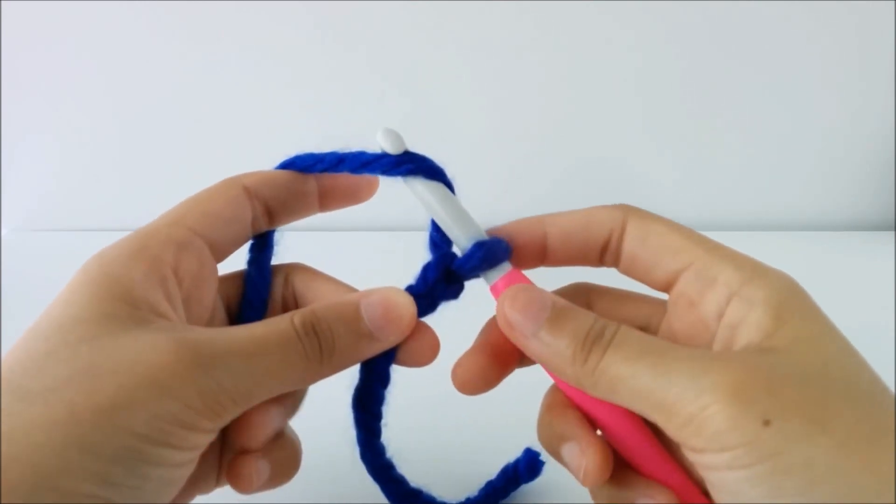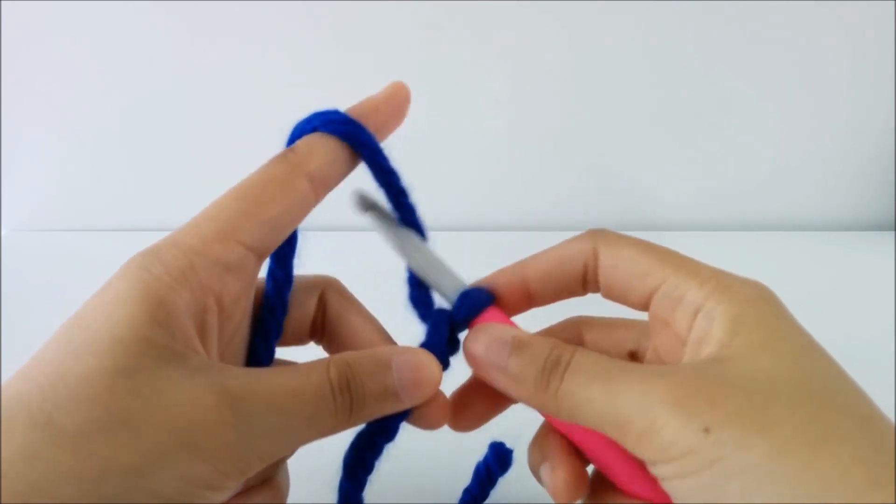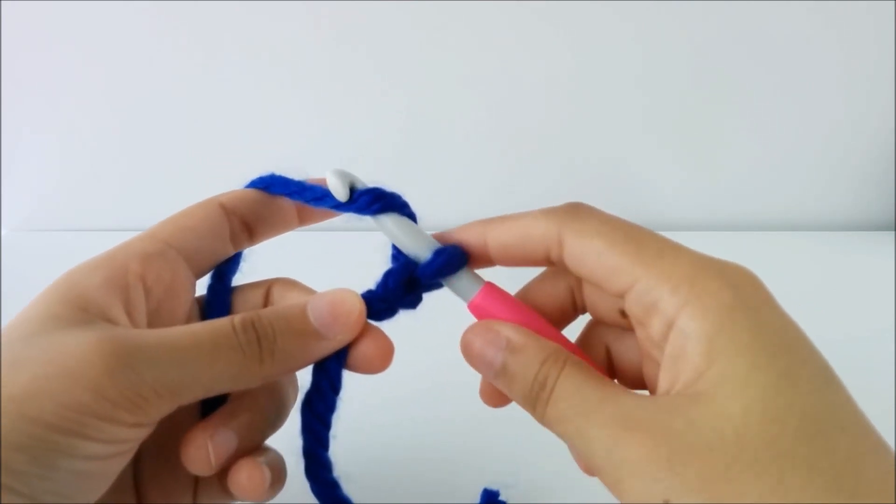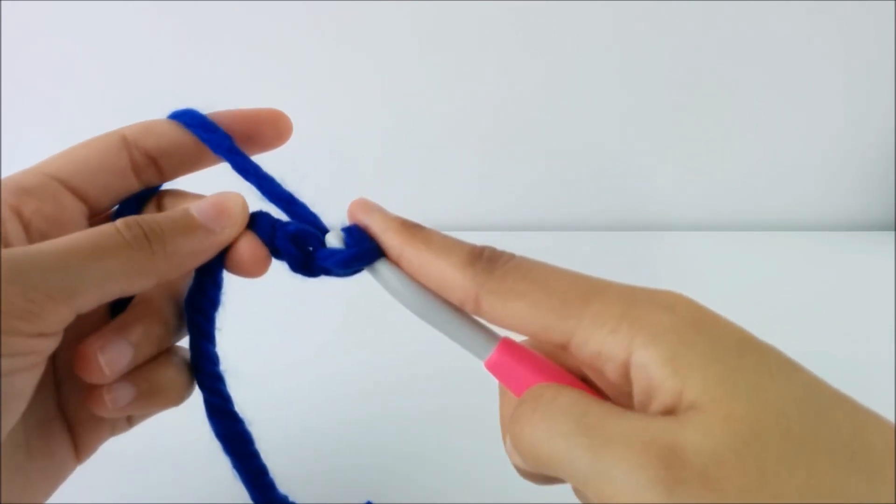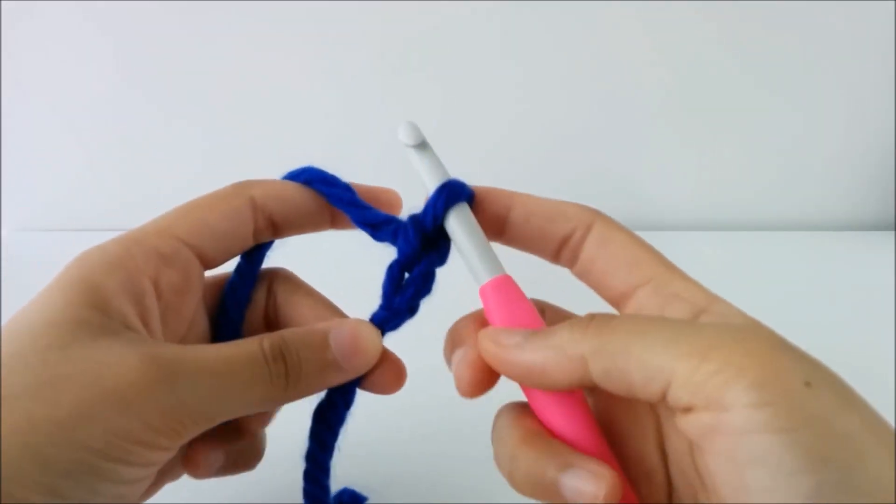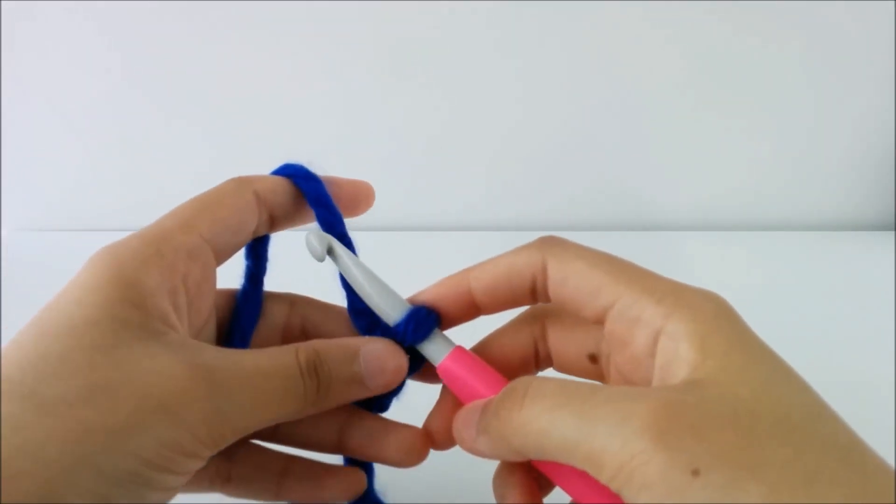And that's all you need to do. You just need to continue bringing your yarn over the hook and then through the loop that's currently on the hook. So that's two.